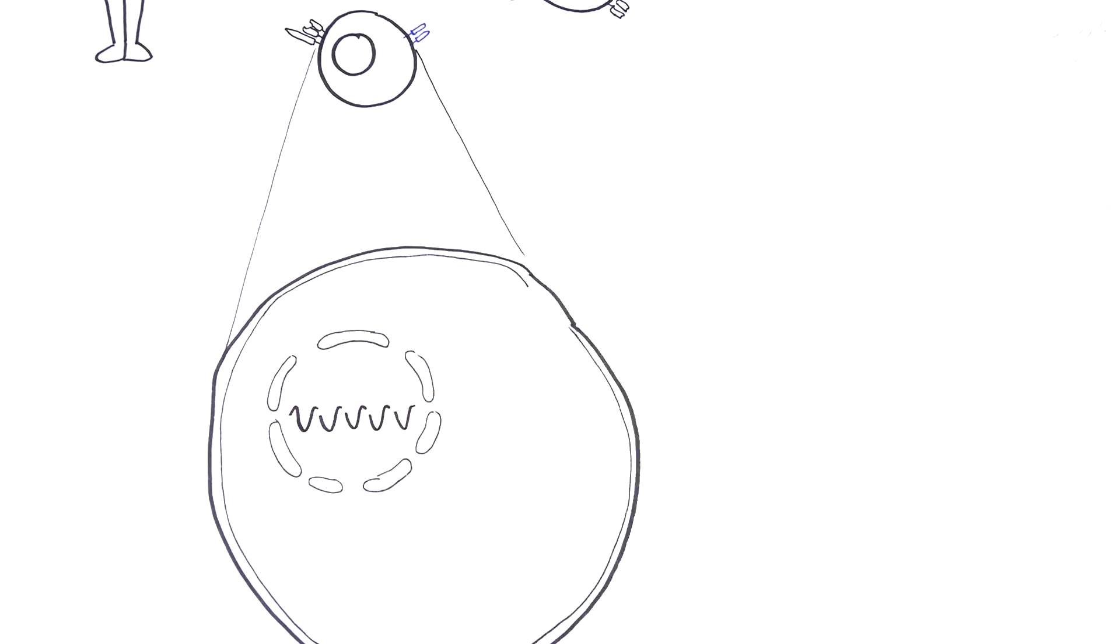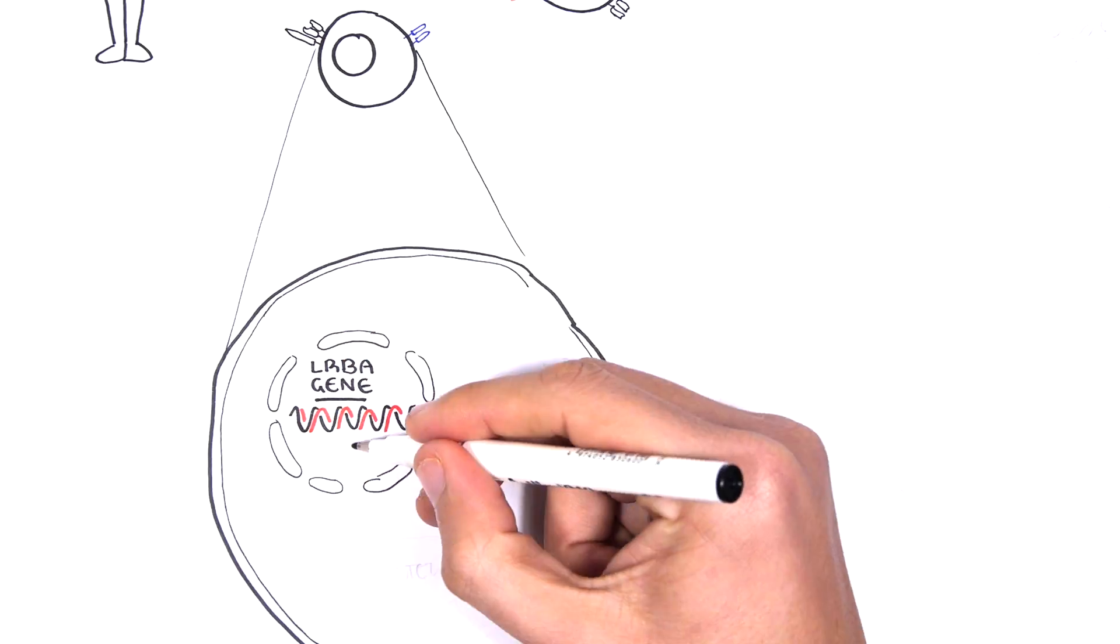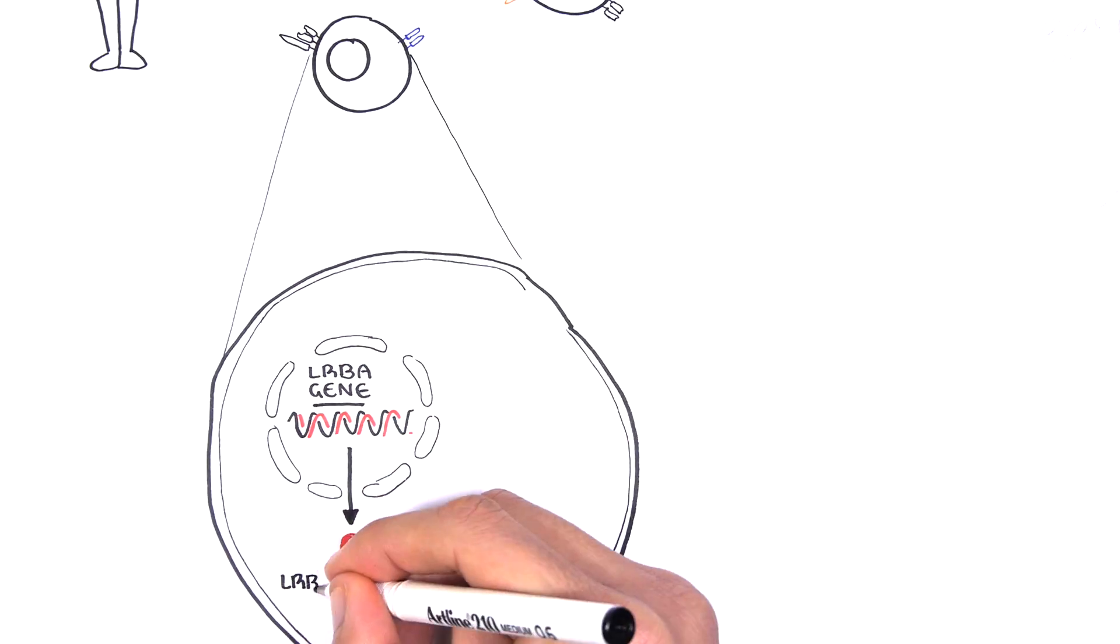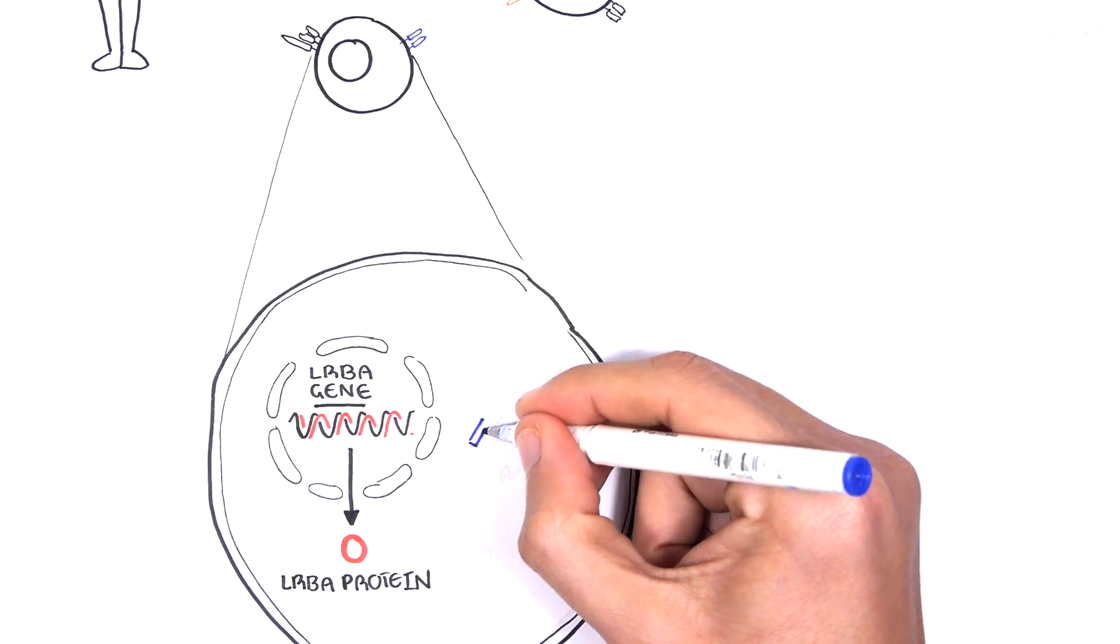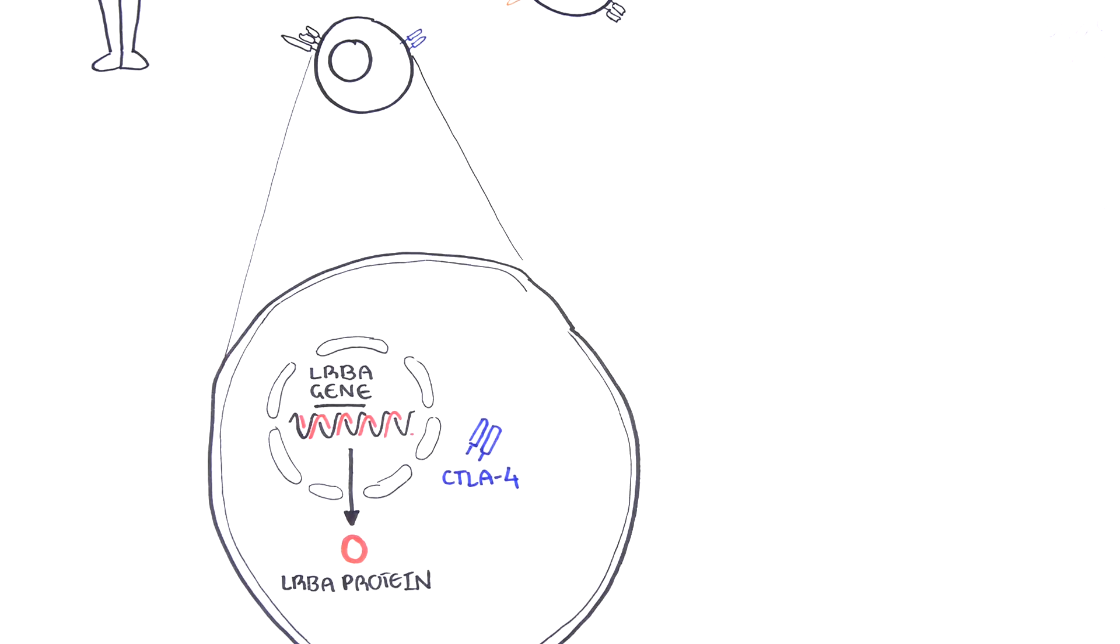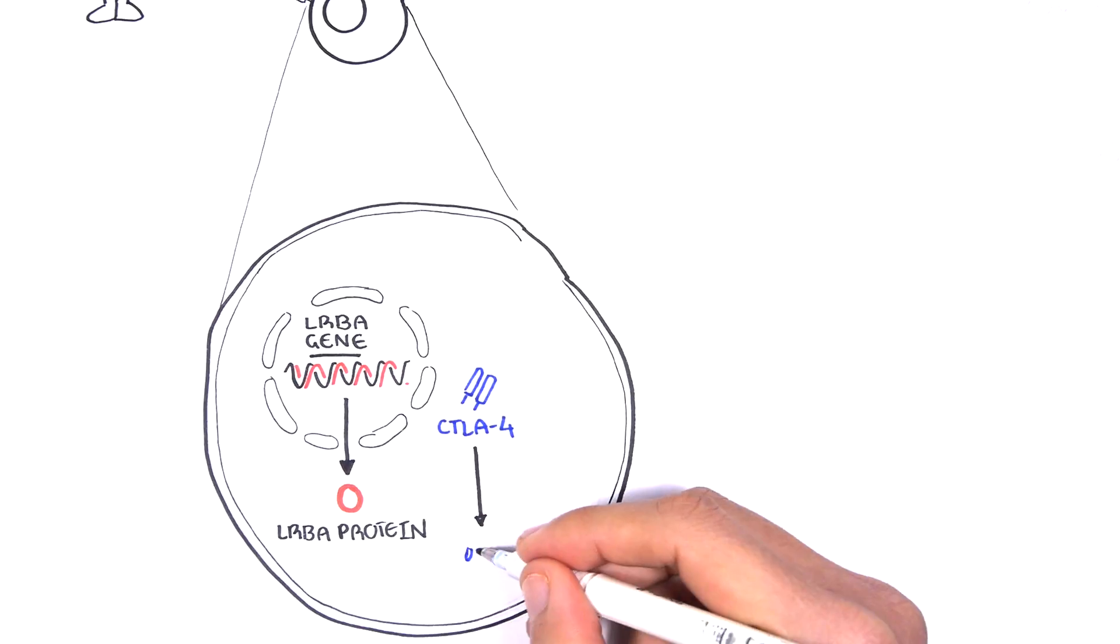Within regulatory T cells, the LRBA gene codes for the LRBA protein. This allows the regulatory T cell to keep our immune system in check. The LRBA protein's job is to protect another protein called CTLA-4, so it can build up on the surface of the regulatory T cell.